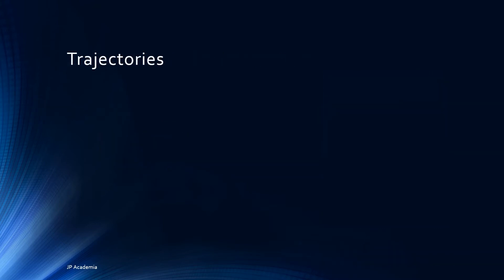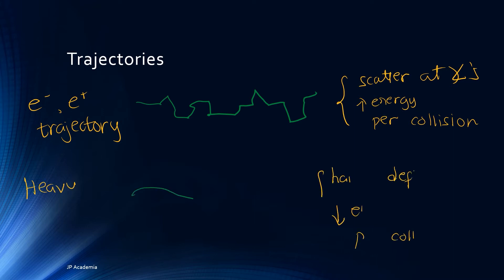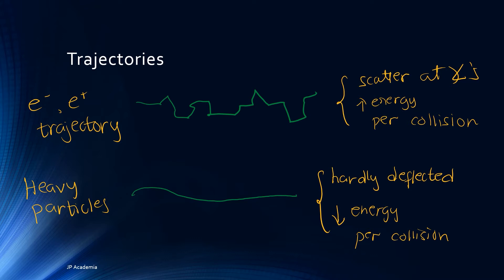Let us now focus on the trajectories of the charged particle. If the incoming charged particle is an electron or positron, we roughly draw its trajectory as shown in green. The electron or positron may collide with an orbital electron and lose all its energy in a single collision because it involves particles with the same mass. It may scatter at large angles with a zigzag pattern and may lose large energy per collision. On the contrary, heavy charged particles are hardly deflected with almost straight trajectories, losing smaller amounts of energy per collision.